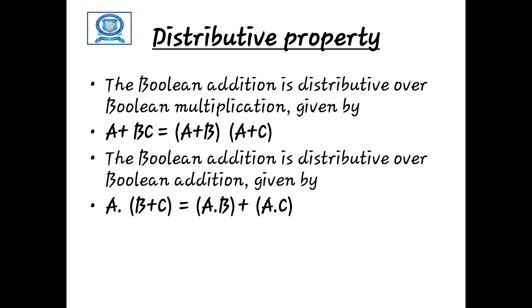The distributive property for multiplication is given as a dot (b plus c) is equal to (a dot b) plus (a dot c). So, a plus bc is called addition distributive over multiplication, and a dot (b plus c) is called multiplication distributive over addition. These two are the distributive properties of Boolean expressions.